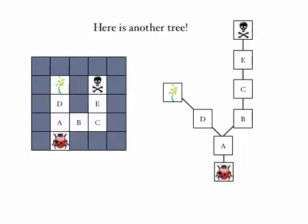So the ladybird when it gets to node A can choose to go along what is labelled in the tree as the left branch to D or the right branch to B.